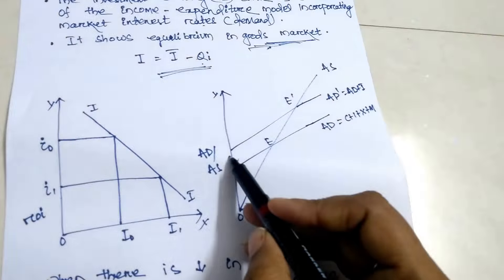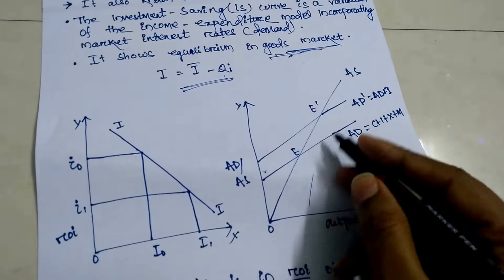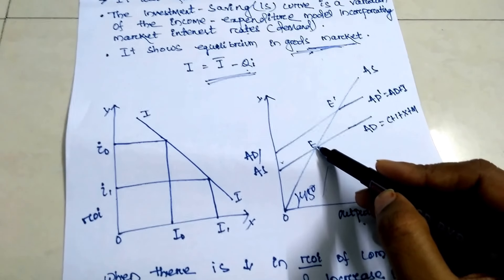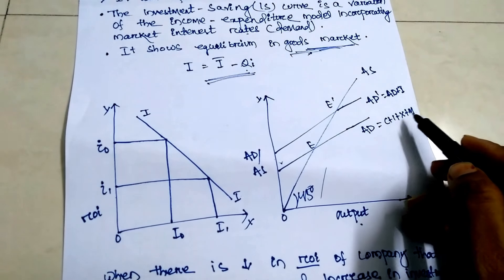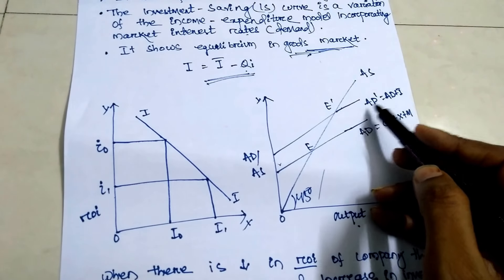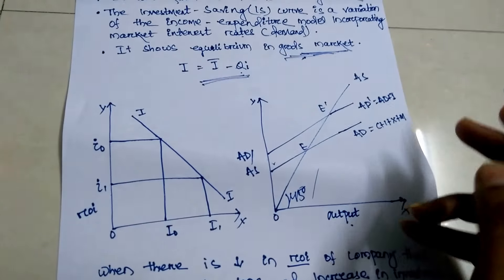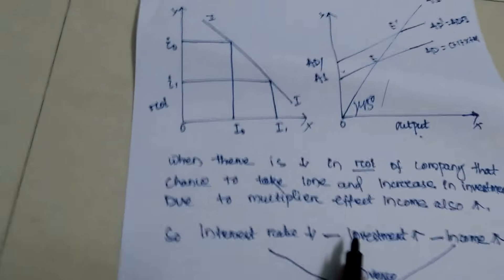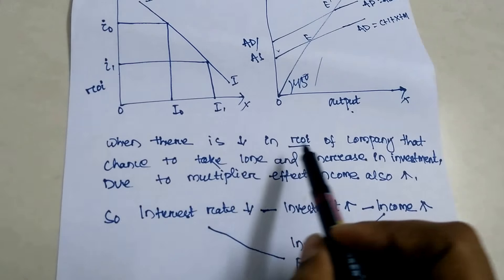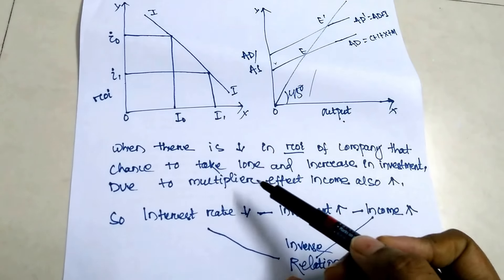In the second diagram, the X axis shows output and the Y axis shows aggregate demand and aggregate supply. The 45-degree AS curve is shown, and AD equals C plus I plus X plus M — consumption plus investment plus export plus import. When there is a decrease in the rate of interest, companies have a chance to take loans and increase investment.